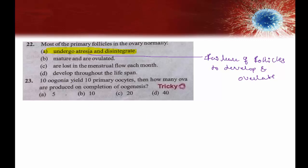If 10 oogonia yield 10 primary oocytes, how many ova are produced on completion of oogenesis?